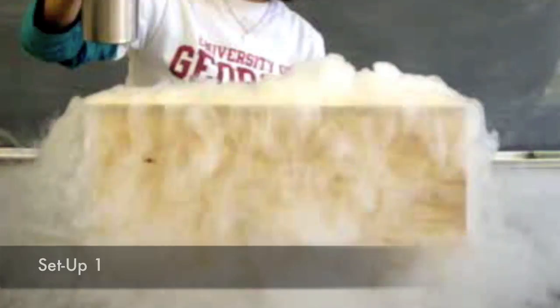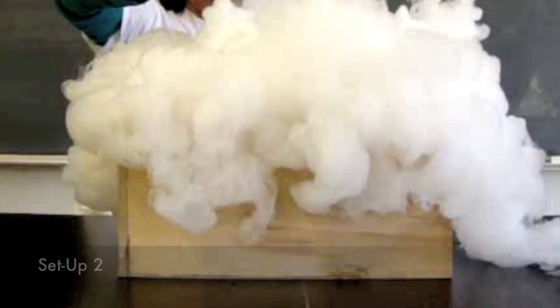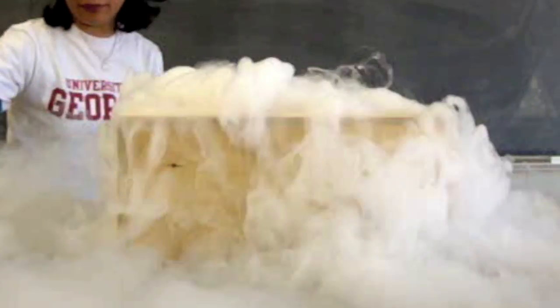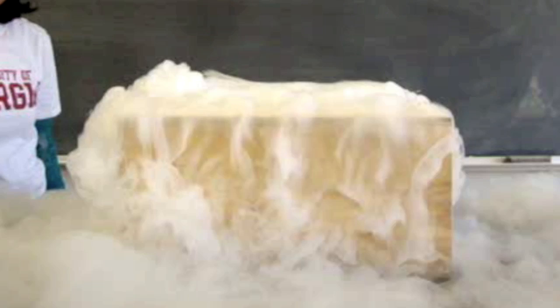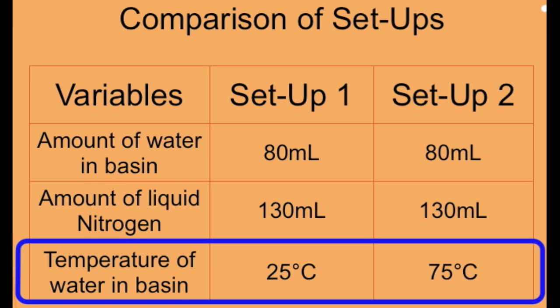What did you observe from both setups? Setup 2 had more fog. Why was this the case? Because, other factors being equal, the difference in temperature between the water in the basin and the liquid nitrogen is directly proportional to the amount of fog formed.